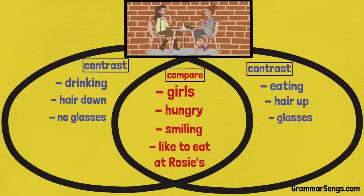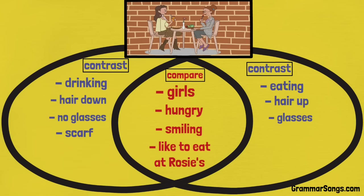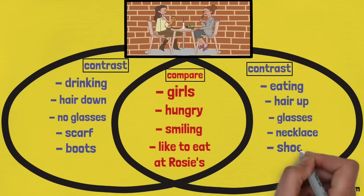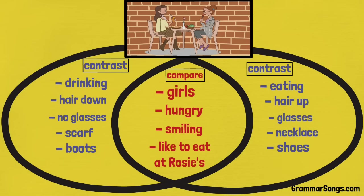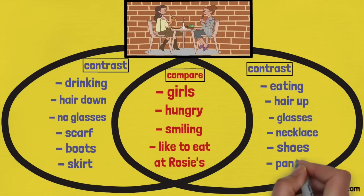The girl on the left wears no glasses, but the other girl does wear glasses. One girl has a scarf, the other a necklace. One has boots, the other shoes. The girl on the left wears a skirt, while the girl on the right wears pants. There are probably even more ways to compare and contrast these two diners.